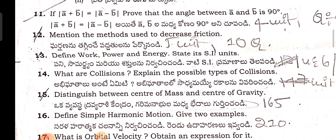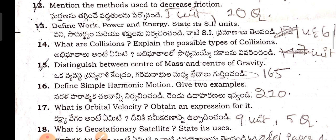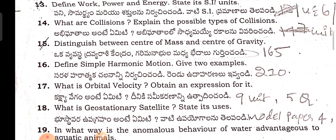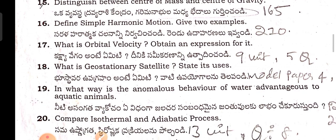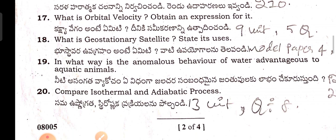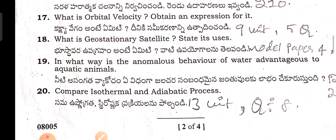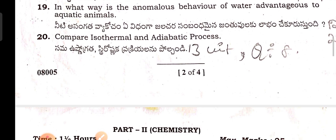Section V questions: Prove that the angle between A and B vectors is 90 degrees. Mention the methods used to decrease friction. Define work, power, and energy; state their SI units. What are collisions? Explain the possible types of collisions. Distinguish between center of mass and center of gravity. Define simple harmonic motion and give two examples. What is orbital velocity? Obtain an expression for it. What is a geostationary satellite? State its uses. In what way is the anomalous behavior of water advantageous to aquatic life? Compare isothermal and adiabatic processes.